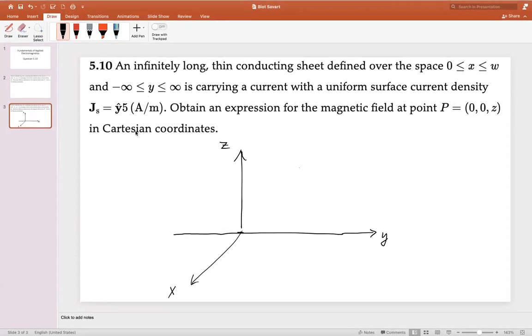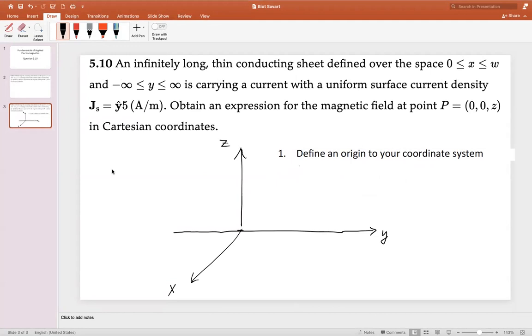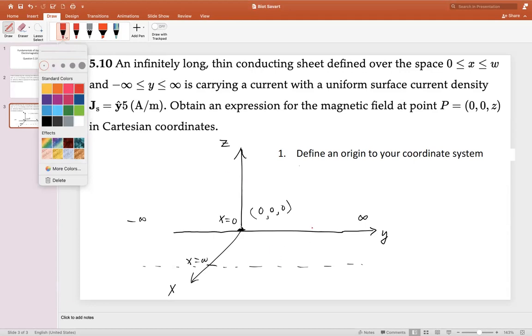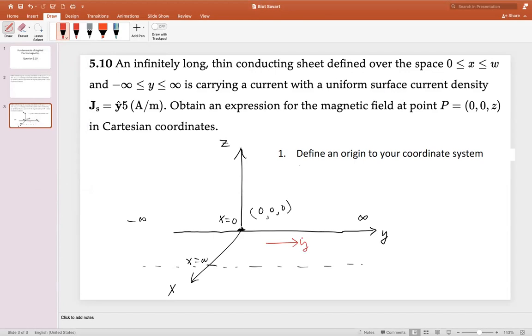So first, let's define a system for our problem. Step one for solving this using the cookbook method is to define an origin to your coordinate system. We're going to define that origin right here at (0,0,0). We can see that the sheet is in this space and in the X direction, it goes from X=0 to some distance X=W, and this sheet of charge stretches from minus infinity to infinity. The surface current Js is 5 amps per meter in the positive Y direction.